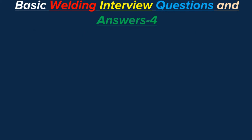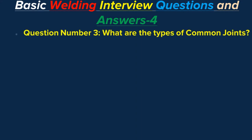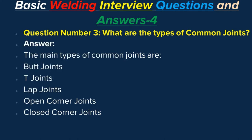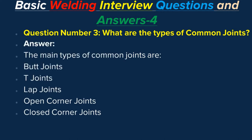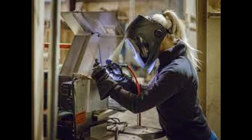Question number three: What are the types of common joints? Answer: The main types of common joints are butt joints, T joints, lap joints, open corner joints, and closed corner joints.